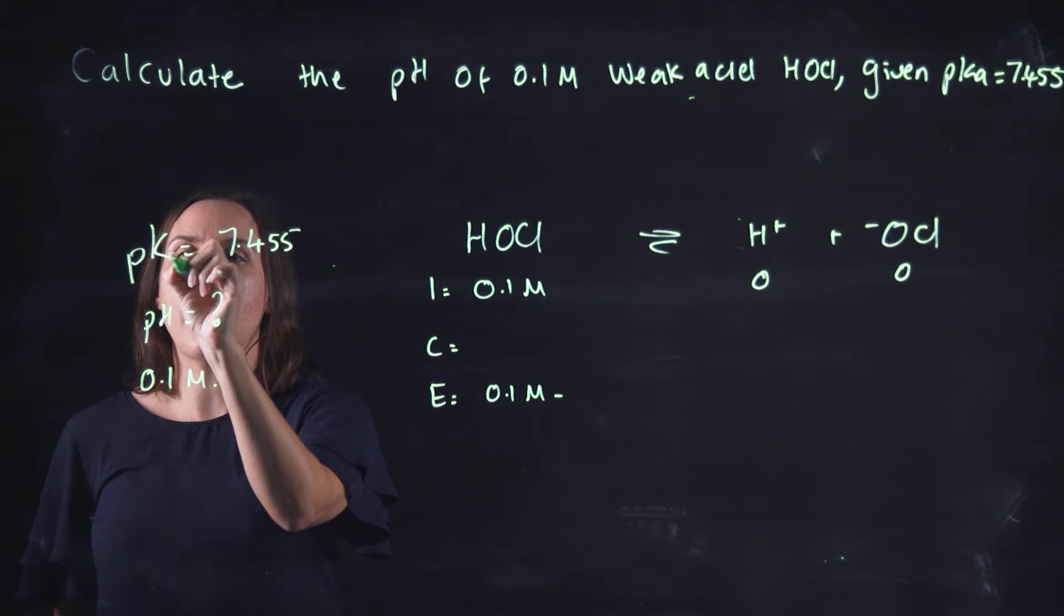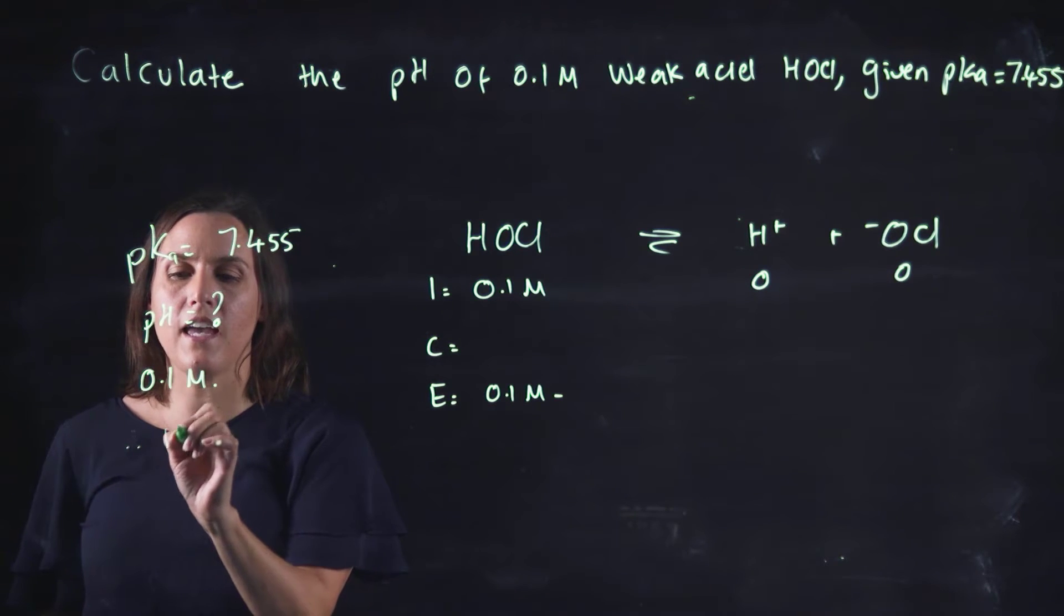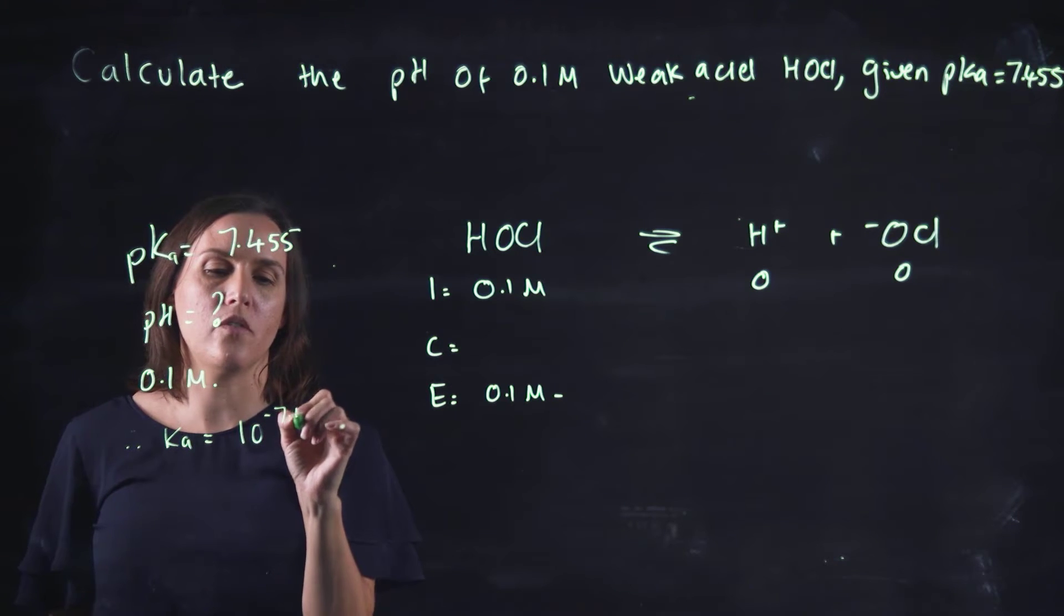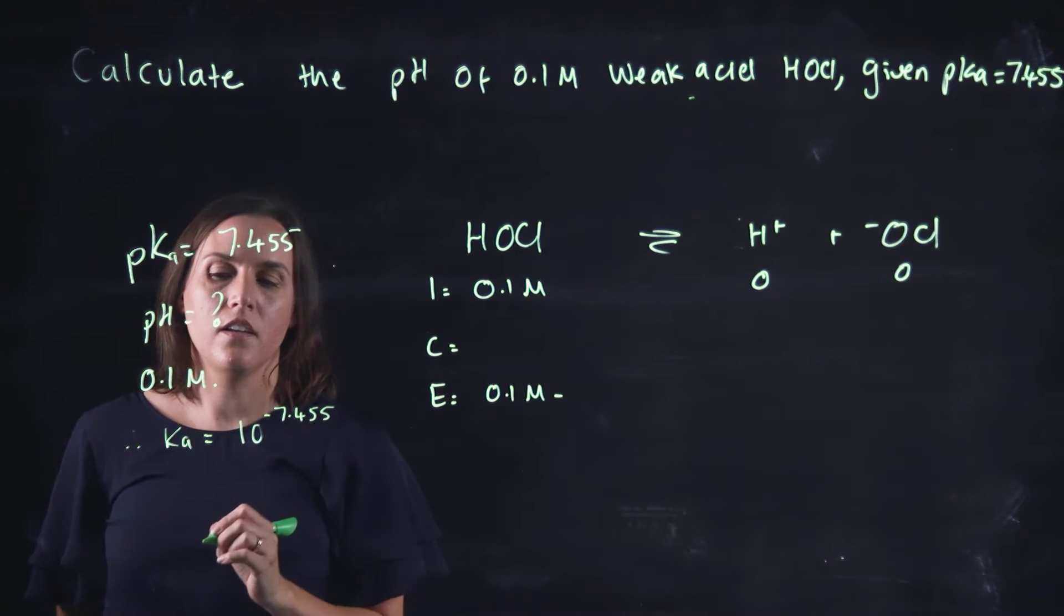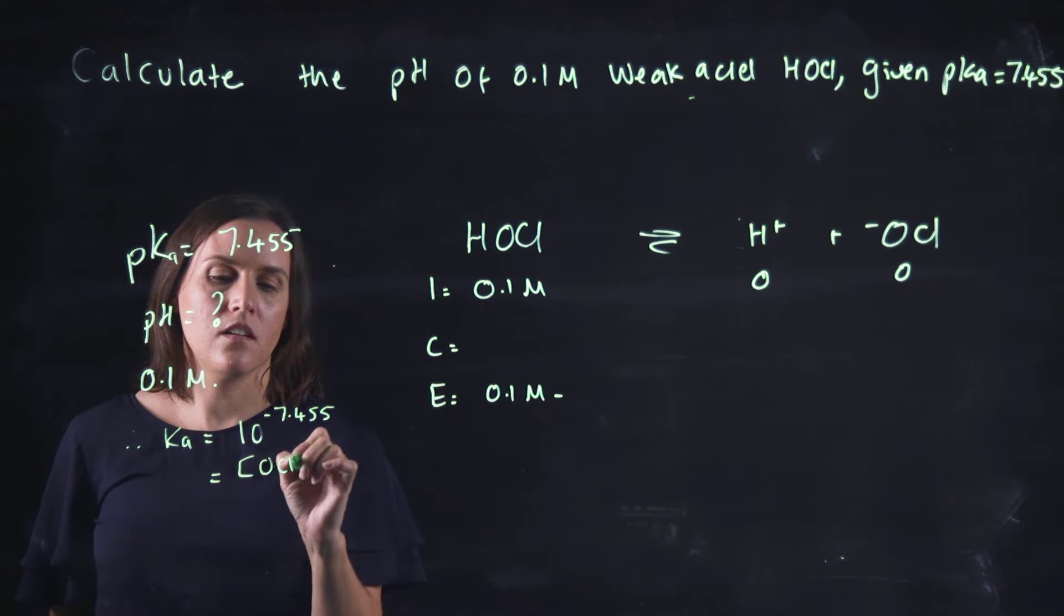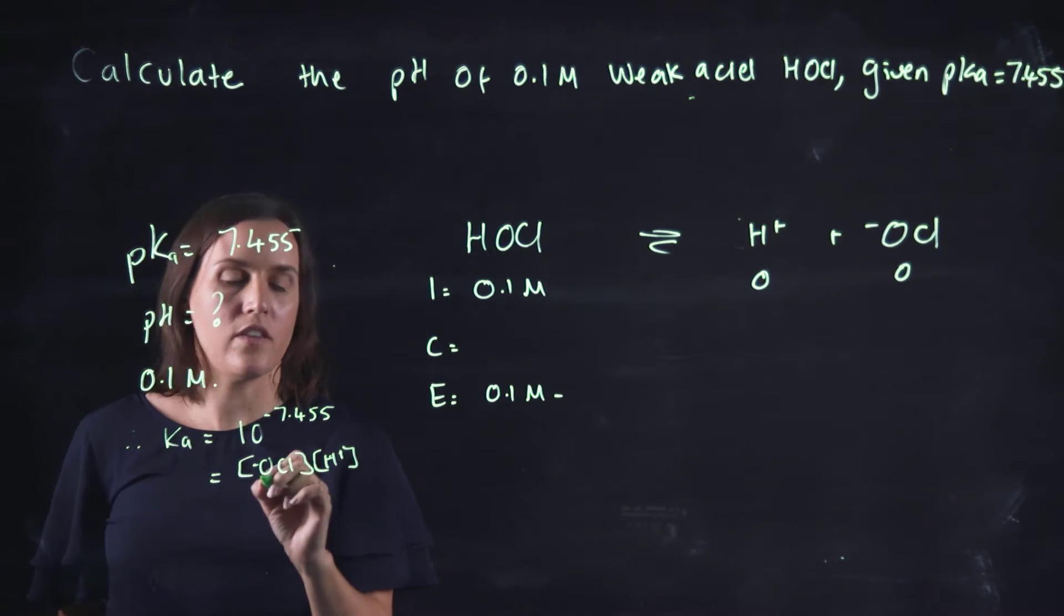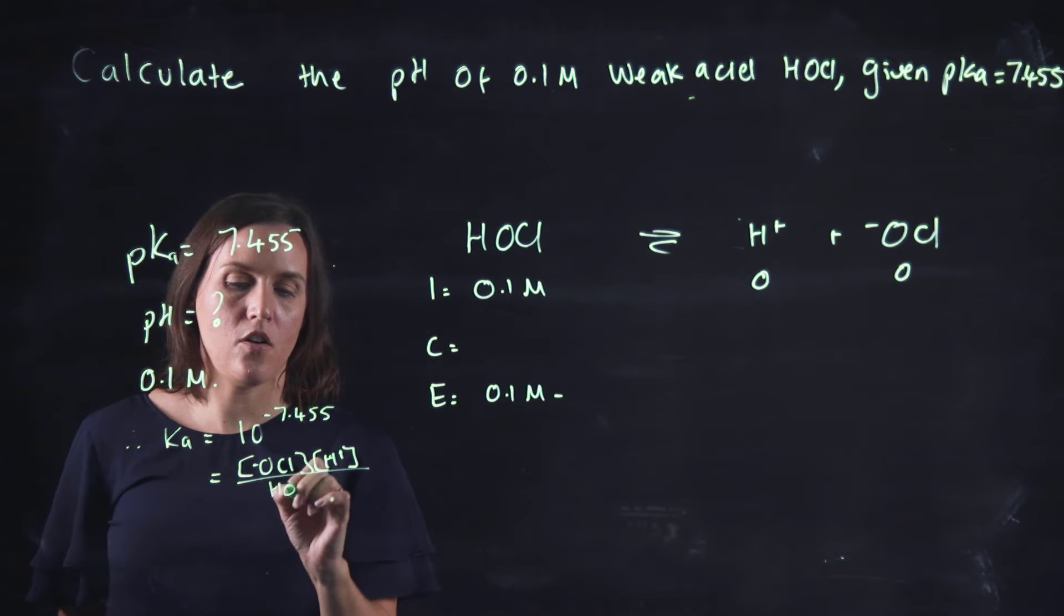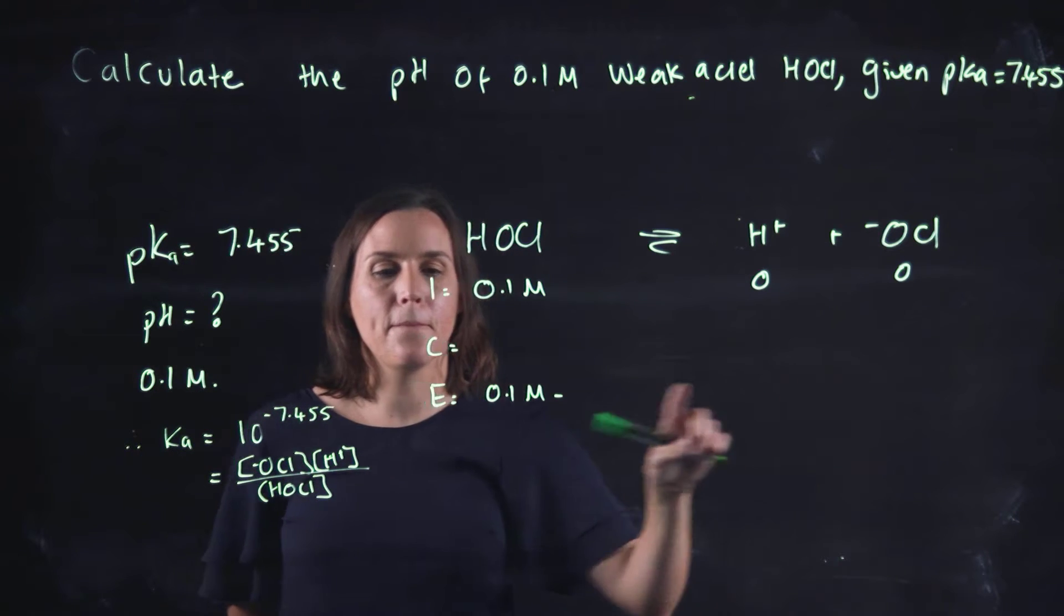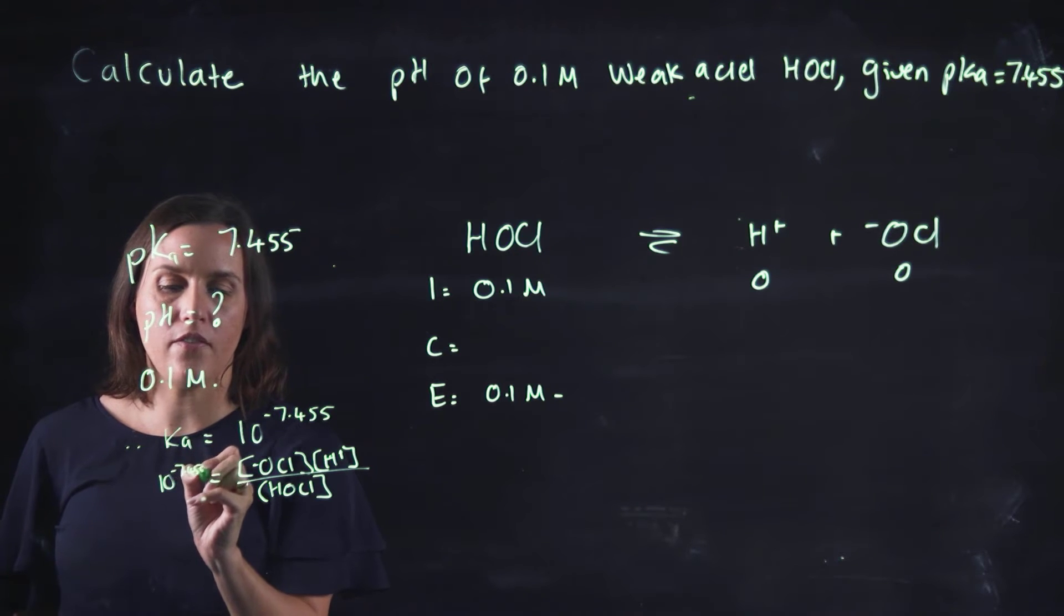So we've got the pKa equals 7.455, so therefore the Ka equals 10 to the power of minus 7.455. We also know the Ka is the products OCl minus times H+ over the HOCl, and this is at our equilibrium. Remember, this value will be 10 to the minus 7.455.